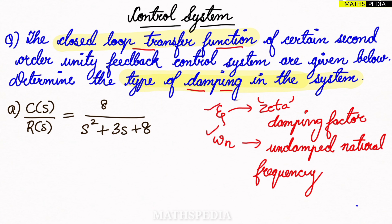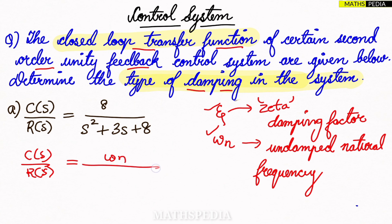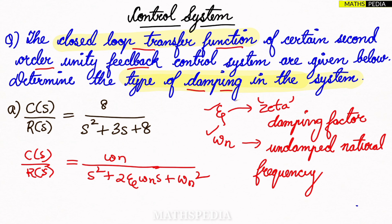For the given question, this is a second-order unity feedback control system. The standard second-order general equation we have to remember is: C(s)/R(s) = ω_n² / (s² + 2ζω_n·s + ω_n²). This equation is important — the zeta value will determine the damping of the system.